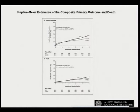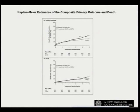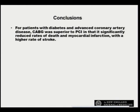Looking at the data, the primary outcome for patients who underwent CABG was definitely superior to those who underwent PCI. Initially, there was an increase in the event rate following CABG, which was due to the higher incidence of stroke. Within a year it leveled out, and subsequently there was a superior benefit for patients with diabetes who underwent CABG with a LIMA graft. In conclusion, for patients with diabetes and advanced coronary disease, CABG was superior to percutaneous coronary intervention in that it significantly reduced rates of death and myocardial infarction, albeit with a higher rate of stroke.